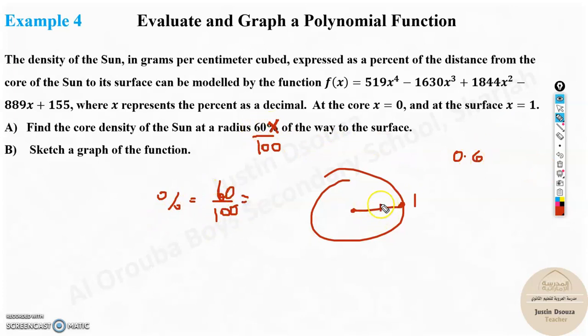0.6 is somewhere over here. What is the x value? x value is 0.6. Substitute in this equation, you will get the answer for the first one, the core density, because that is the function given. Instead of x, you need to put 0.6.